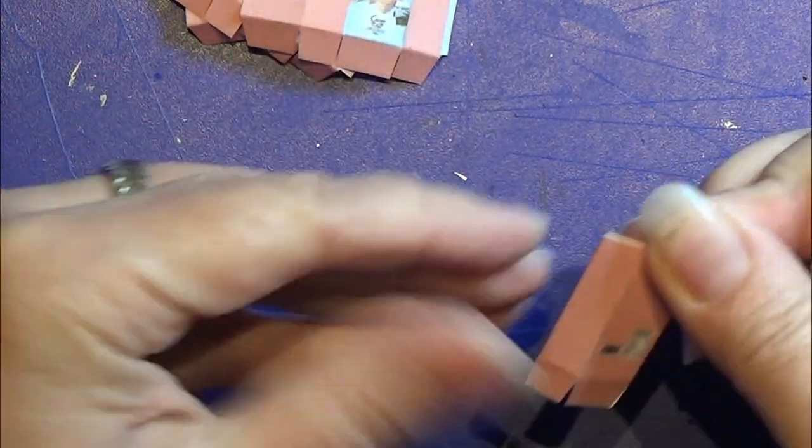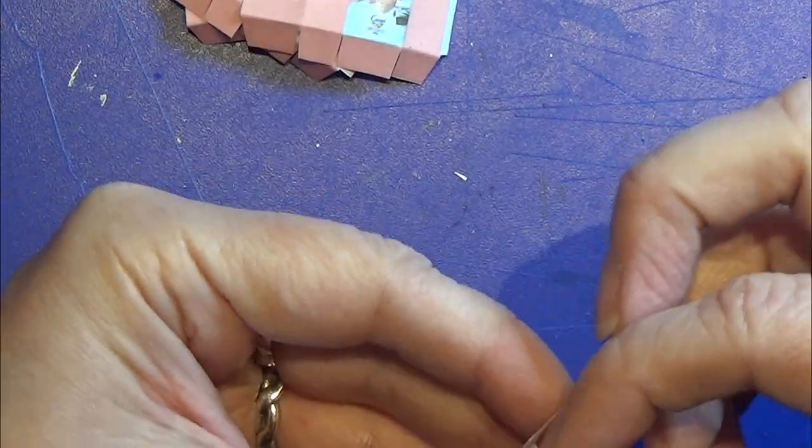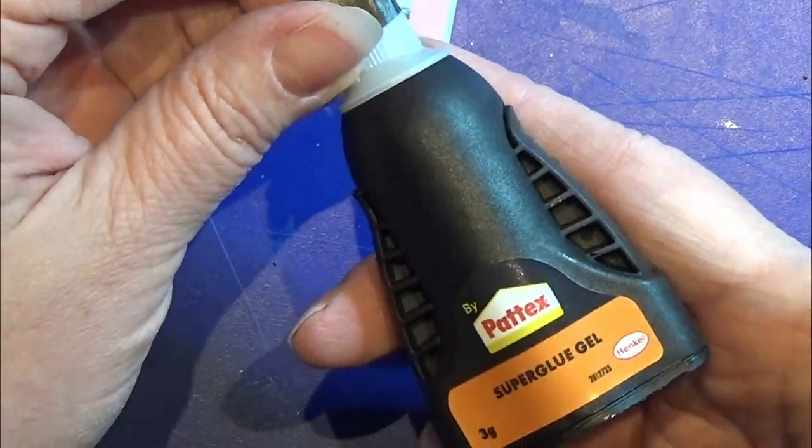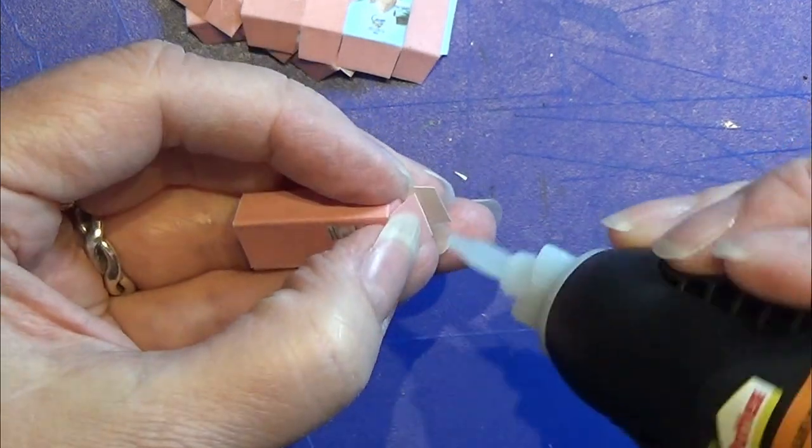Then I first folded the side tabs on the back in, then the large flap over, and then the front flap I am going to glue down with a tiny bit of super glue gel.